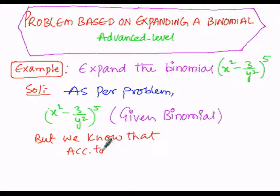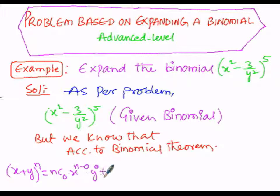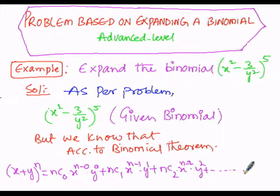According to the binomial theorem, the expansion of (x + y)^n equals nC0 times x^n times y^0, plus nC1 times x^(n-1) times y^1, plus nC2 times x^(n-2) times y^2, plus the last term nCn times x^(n-n) times y^n, where the coefficients are nC0, nC1, nC2, up to nCn.